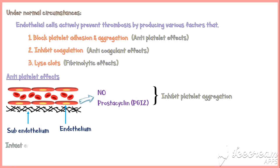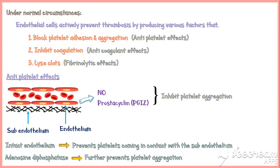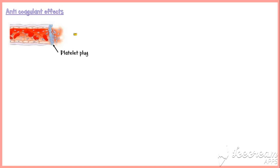Intact endothelium prevents platelets from coming into contact with the subendothelium. Furthermore, endothelial cells produce adenosine diphosphatase, an enzyme which degrades ADP to further prevent platelet aggregation. After a platelet plug is formed, the next step of hemostasis is activation of the coagulation cascade, which ultimately results in deposition of fibrin over the platelet plug.